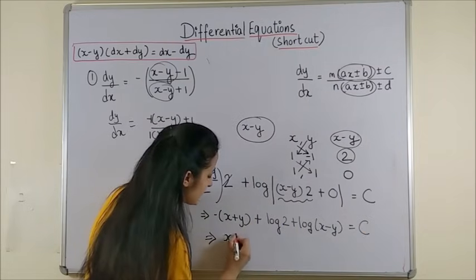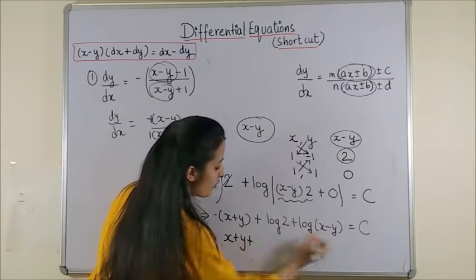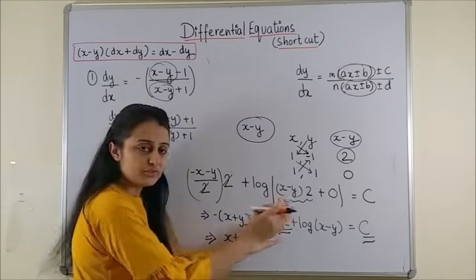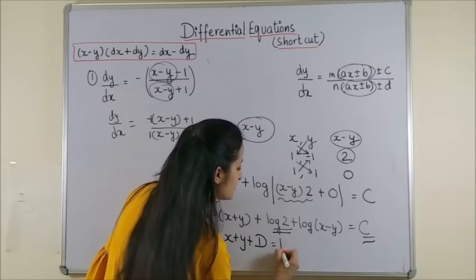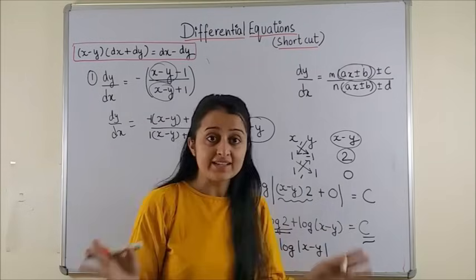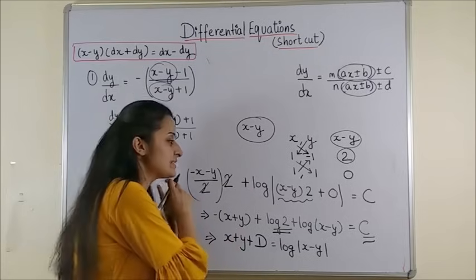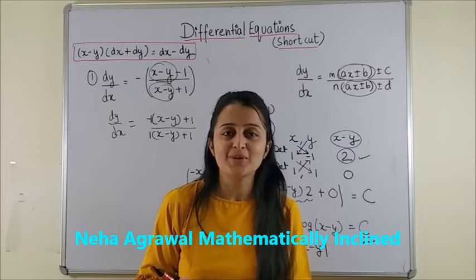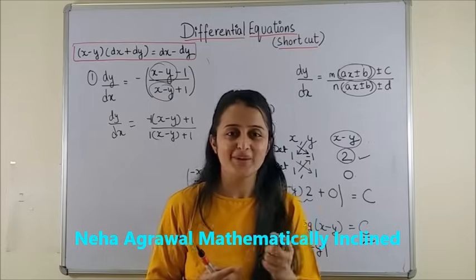Now, on simplifying we get x plus y plus, I can call this as say d if I combine these two since both of them are constants is equal to log of mod x minus y. That's it. You had actually got your answer here only. This was only the simplification part. Have a closer look and then we'll move to more questions.